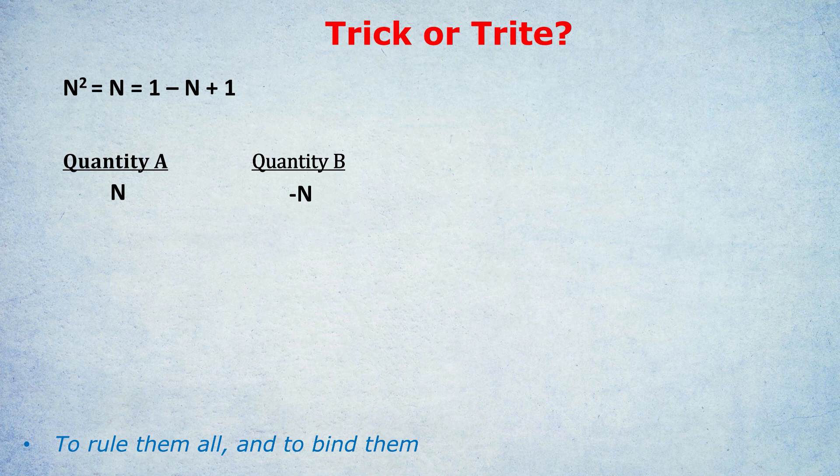What's bigger? Quantity A or quantity B? Quantity A is n, quantity B is negative n.